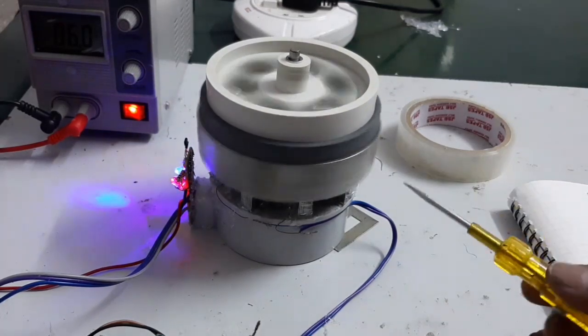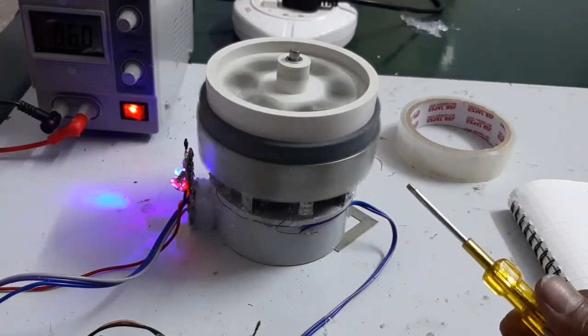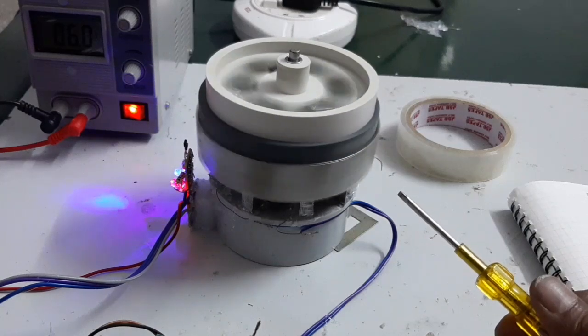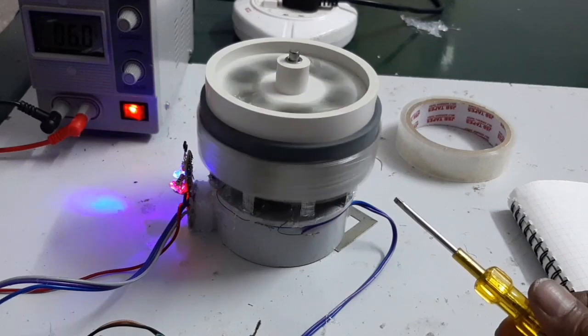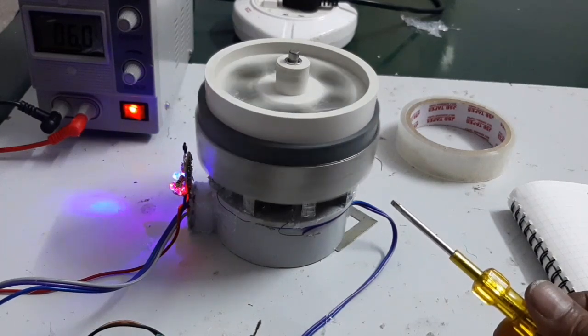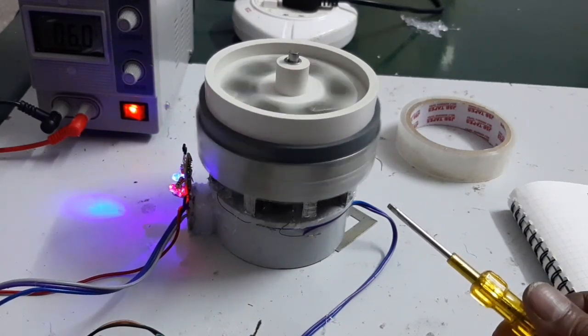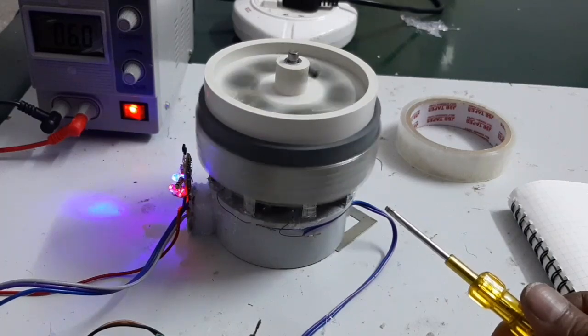Here is the energy efficient BLDC motor using a single coil. Now I'm going to explain how to make a stator and rotor using a single coil.